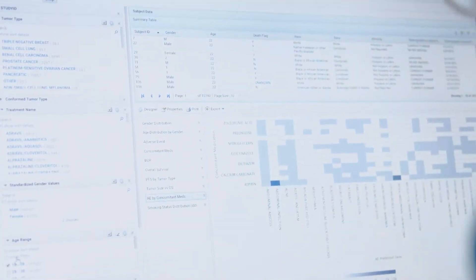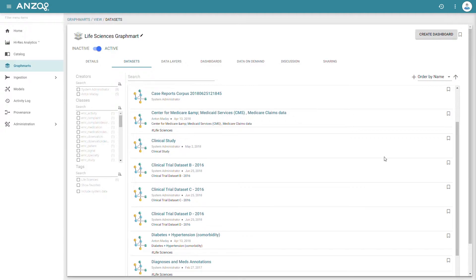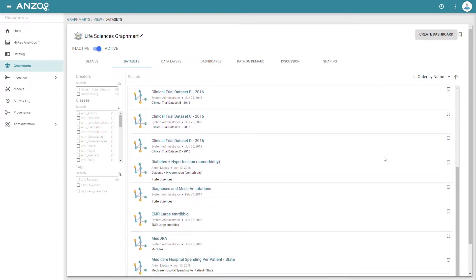Powering Anzo is Anzo Graph, our in-memory graph database that we've built to query across trillions of facts and relationships. Without this unique feature, you'd be limited to analyzing small data sets or waiting for help from IT.